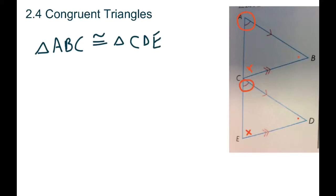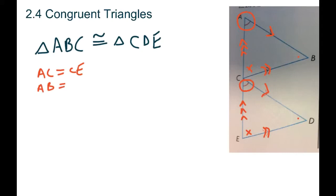Because they're congruent, all the angles are the same but also all the sides are the same. You can see they've got one arrow for the top side, two arrows for the bottom ones, and three arrows to show that side has to be the same as well. So side AC for the first triangle equals CE for the second; side AB for the first equals CD for the second; and BC for the first equals DE for the second.